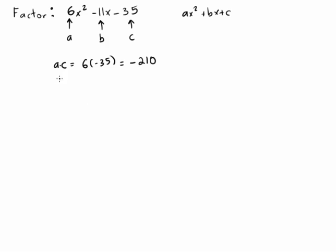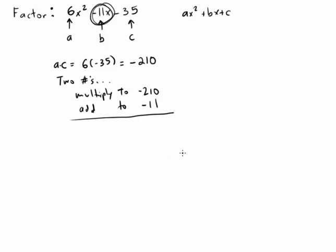And then what we're looking for is a combination of two numbers that do two things. They need to multiply to the number we just came up with. They need to multiply to AC, or in other words, negative 210. And then they also have to, at the same time, add to the number B up here, the negative 11. So we're looking for combinations of two numbers that multiply to negative 210 and add to negative 11.